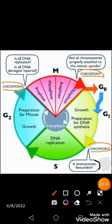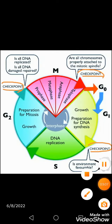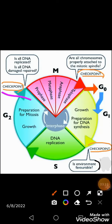After G1 phase there is a checkpoint, which verifies that the environment is favorable for the next step of DNA synthesis — similar to exams that check whether students are ready. Another checkpoint occurs after G2 phase, which ensures that all DNA has been replicated, any damaged DNA has been repaired, and all environmental prerequisites are met before moving into mitosis.